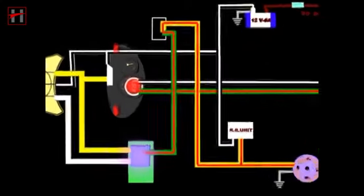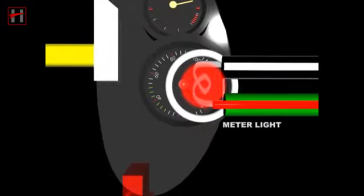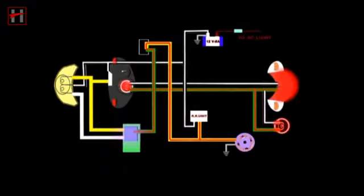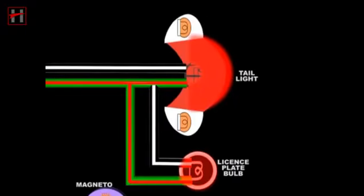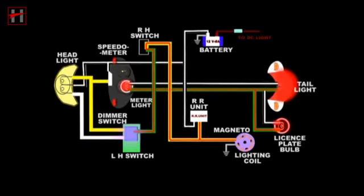the meter light will start glowing through the green wire. The green wire connects the right-handle switch to the dimmer switch.